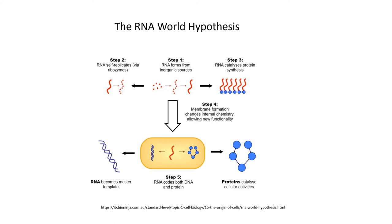In this way, RNA can in theory give rise to both DNA and the proteins necessary to make the cell function and to replicate DNA. So RNA can be both the chicken and the egg. That is the RNA world hypothesis advanced by its proponents to try to solve the chicken and egg problem.